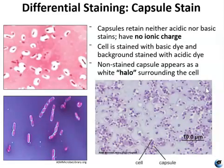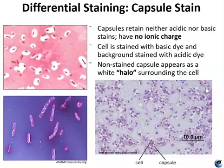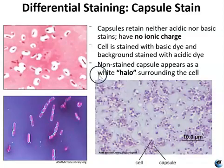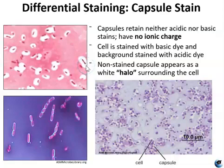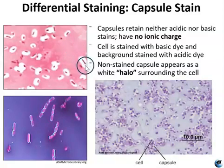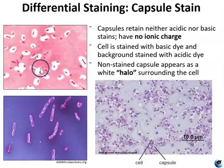Capsules are composed of mucoid polysaccharides or polypeptides that repel most stains. The capsule staining technique takes advantage of this by staining around the capsule — using a combination of positive and negative stains. A basic stain like crystal violet, safranin, or methylene blue stains the cell itself. An acidic stain colors the background. The capsule has a neutral charge, so it is attracted to neither dye, and it appears as a clear halo around the cells — which can be very large or very small and difficult to see.